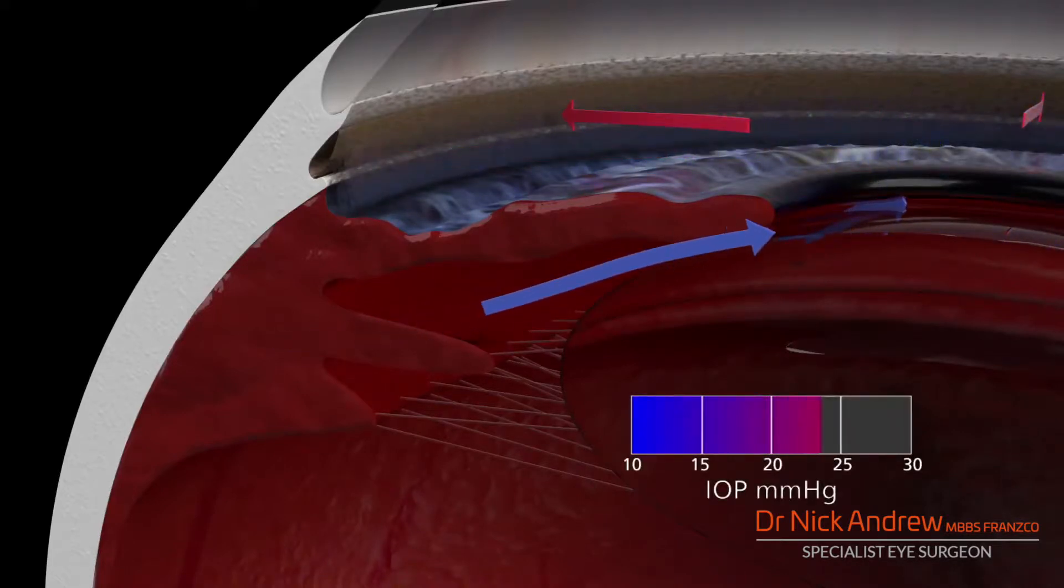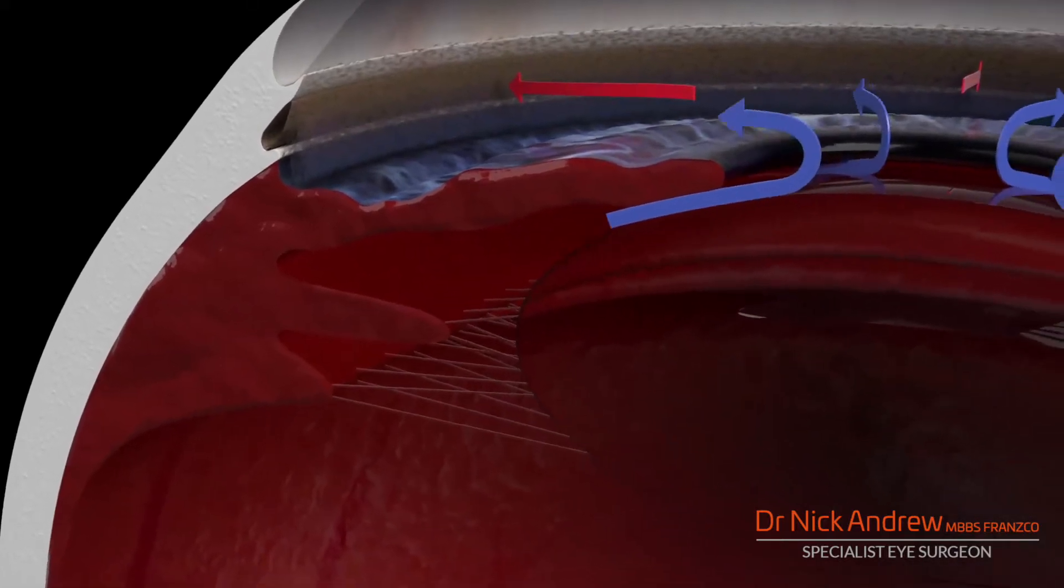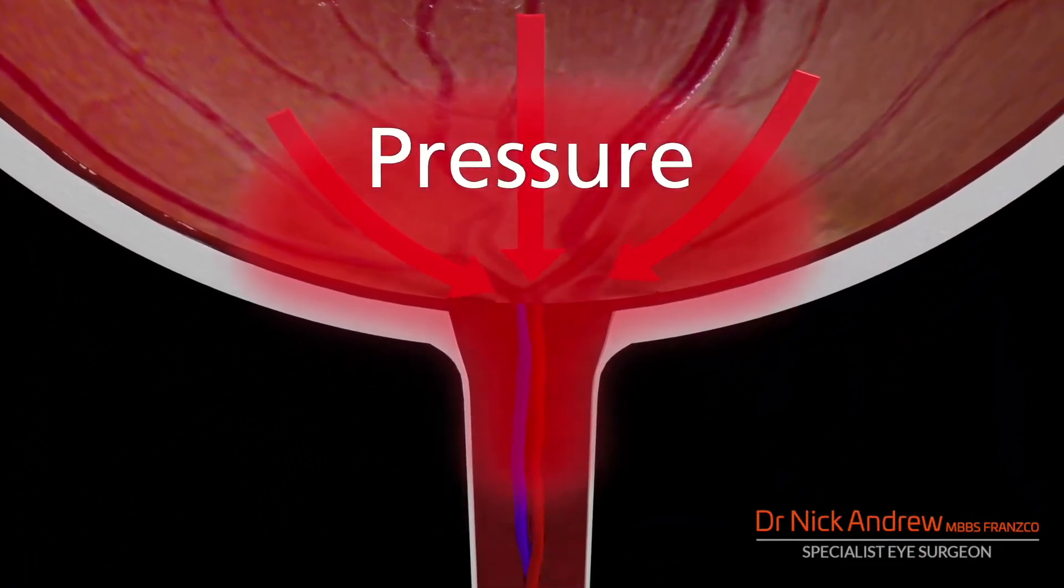Consequently, intraocular pressure begins to rise. Glaucoma is when pressure inside the eye causes damage to the optic nerve. This damage is progressive and irreversible.